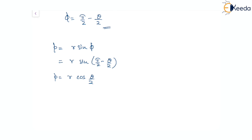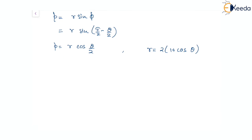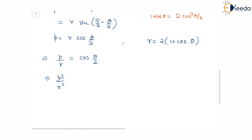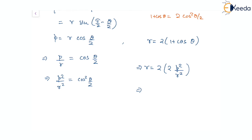So we have p equal to r cos(θ/2) and r equal to two times of one plus cos theta. To eliminate theta, note that one plus cos theta is two cos squared(θ/2). Therefore p by r equals cos(θ/2), and p squared by r squared equals cos squared(θ/2). So r becomes two times two times cos squared(θ/2), which is two times two times p squared over r squared, meaning r cubed equals four p squared.